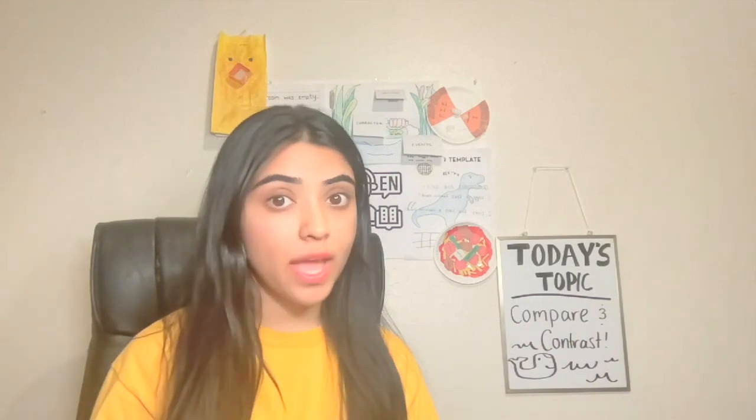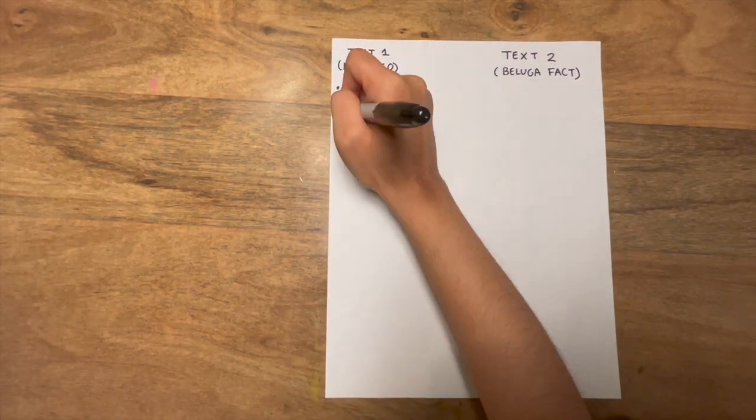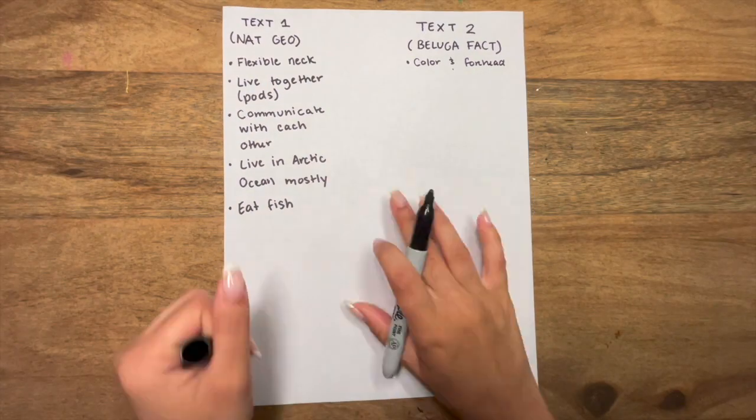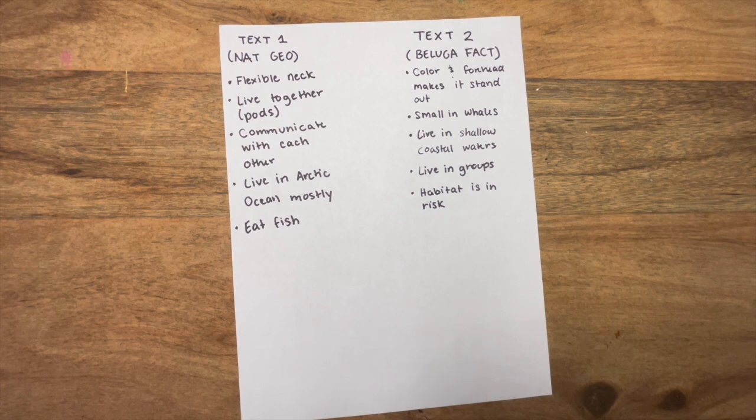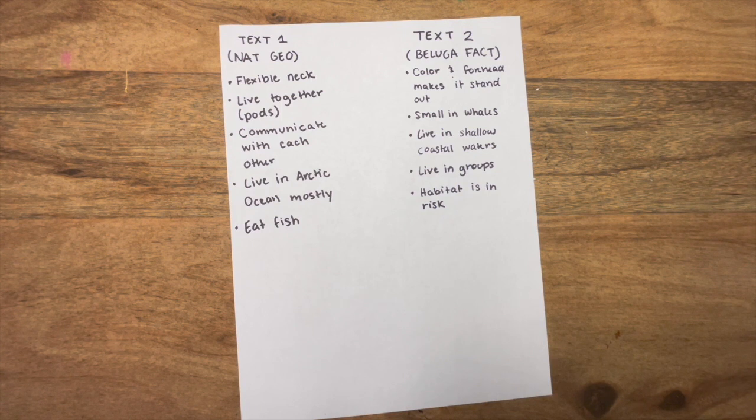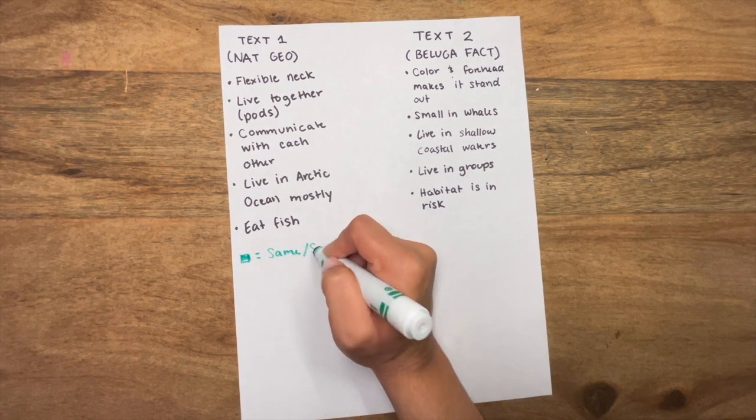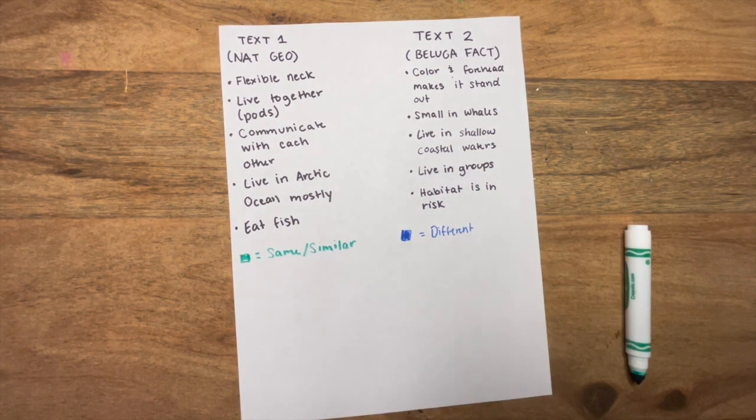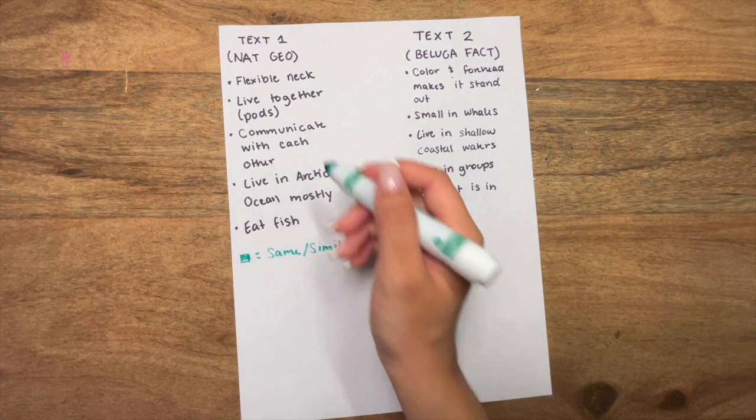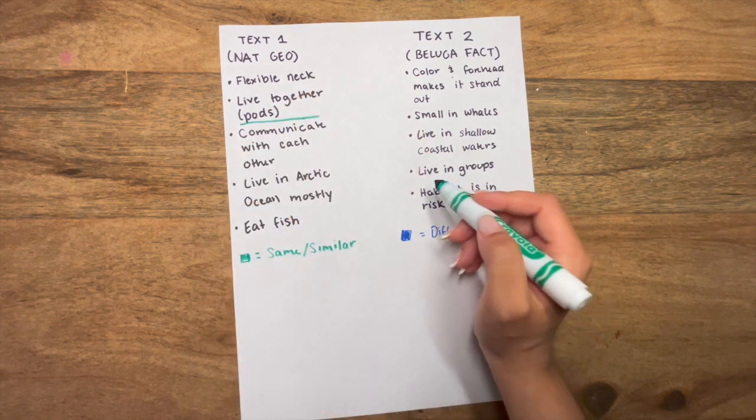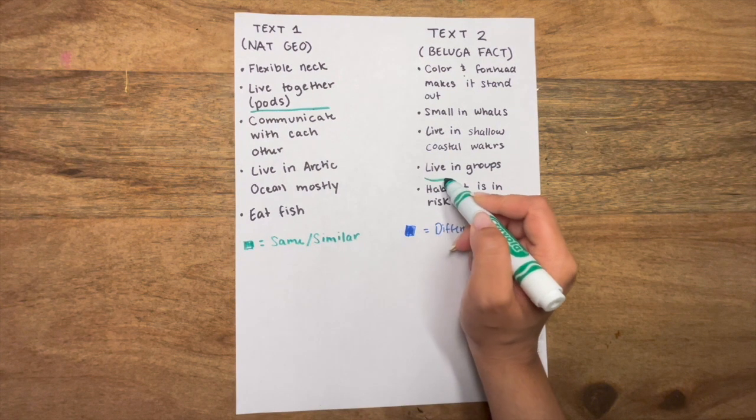Now, recalling the tips that we went over at the beginning of the video, let's go ahead and write down some of the main points in the articles that we just read. I'm going to be using green for points that are similar and blue for points that are different. And I'm going to write a small little note so that we know what colors represent what. So, I can notice that there are around two similar points from each of the texts. One is that beluga whales live together. And text two also mentions this as they live together in groups.